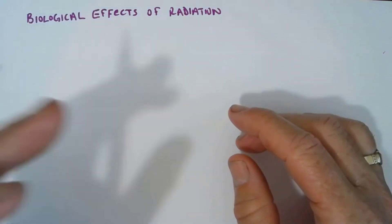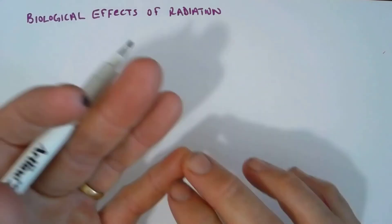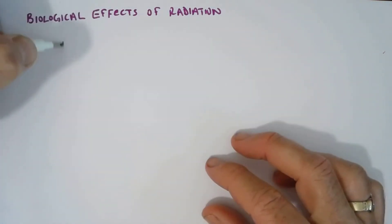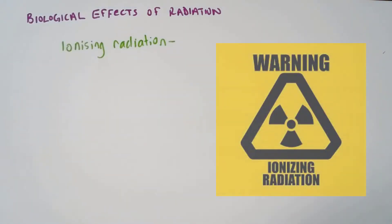The radiation that gets emitted by alpha, beta and gamma decay is called ionising radiation. It's called ionising radiation because it actually creates ions.